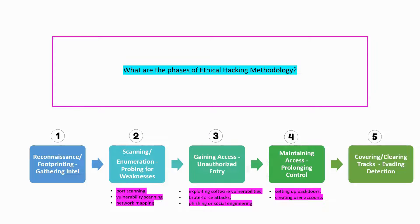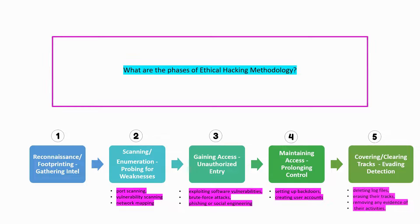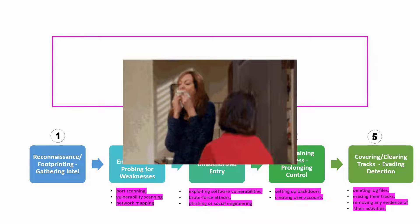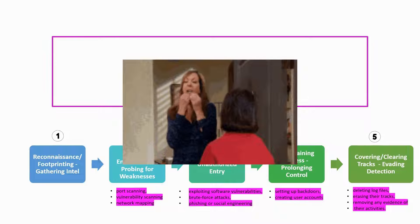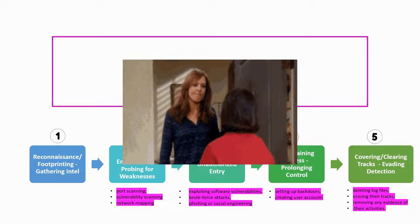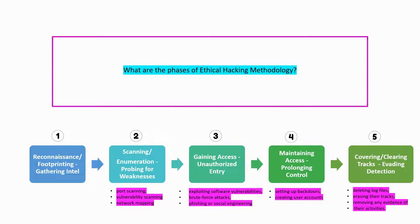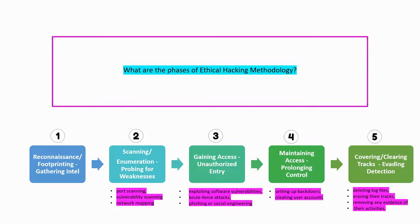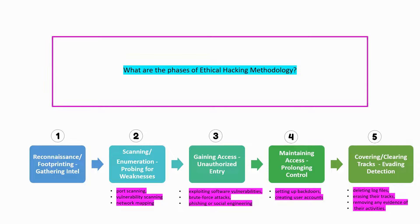The last step of the ethical hacking methodology is covering and clearing the tracks. This includes deleting log files, erasing their tracks, and removing any evidence of their activities. This ensures that the target system or network is not aware of the ethical hacker's activities. These are the 5 steps of the ethical hacking methodology.